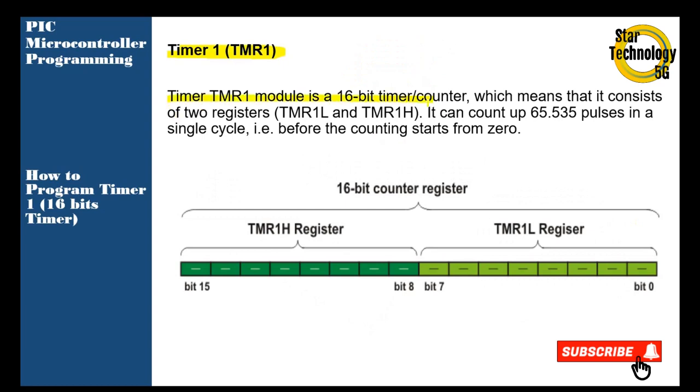Timer 1 module is a 16-bit timer/counter which means that it consists of two registers: TMR1L and TMR1H. It can count up to 65,535 pulses in a single cycle before the counting starts from zero. You can see Timer 1 is a 16-bit counter divided into two parts: TMR1 higher bits and TMR1 lower bits.